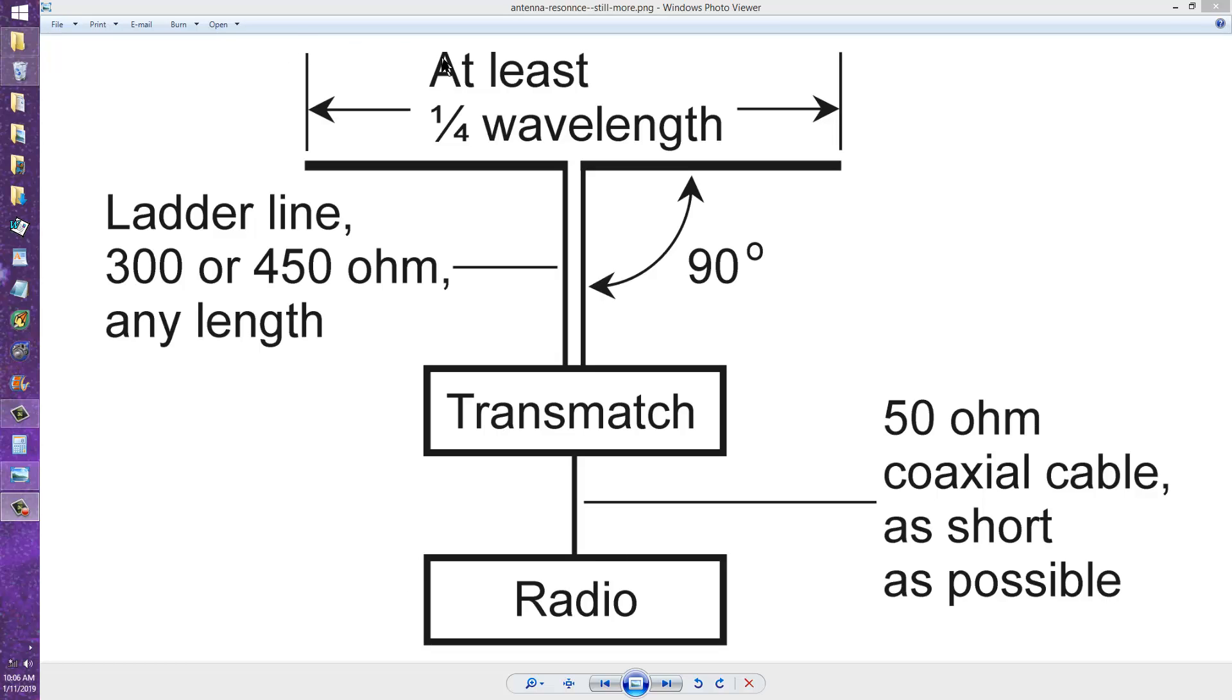When you tune that transmatch for a 1 to 1 standing wave ratio at the radio, you will have a resonant system. Even if the antenna by itself is non-resonant, even if the antenna combined with the feed line is non-resonant.